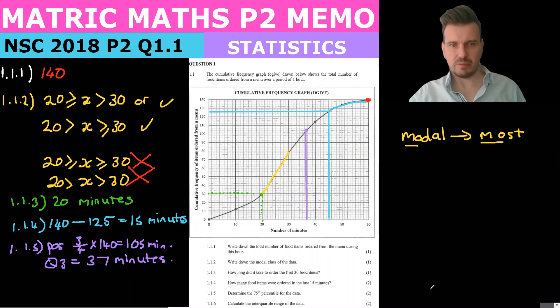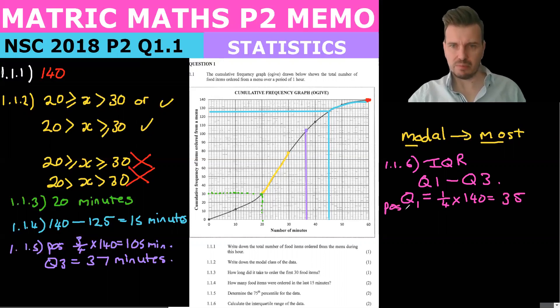1.1.6 - they want the IQR, the interquartile range, which we know is Q1 minus Q3. Well we've already got Q3, so let's just get Q1 now. So Q1 is equal to 0.25 or a quarter, one over four, times our 140, which is going to give us 35. That's the position.